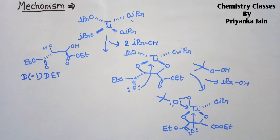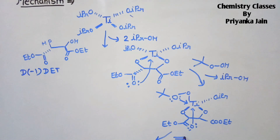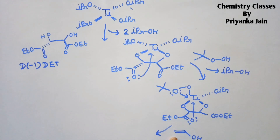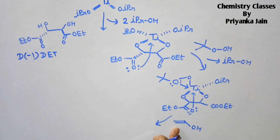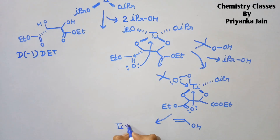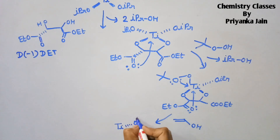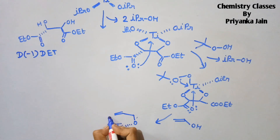Now we react with the allylic alcohol that is to be epoxidized. It reacts at the oxygen position. A bond forms here at the O group, and we can see the double bond present. A bond is formed between the oxygen and the allylic alcohol in this way.